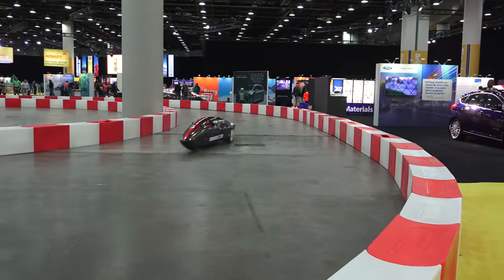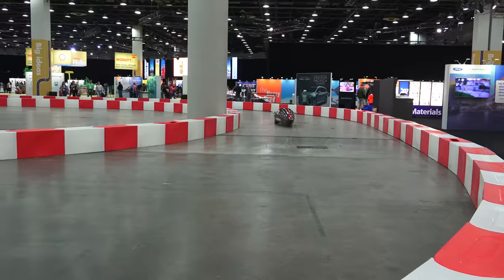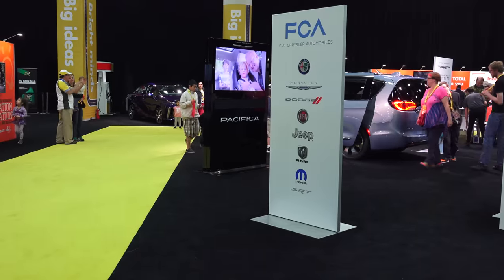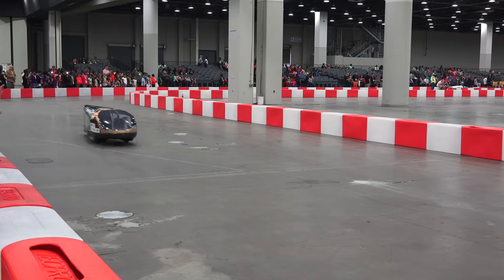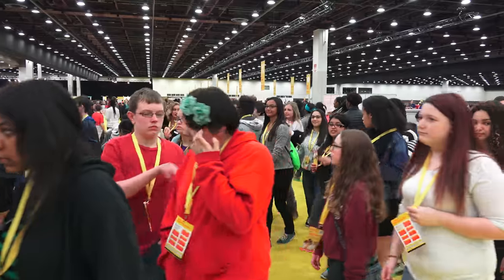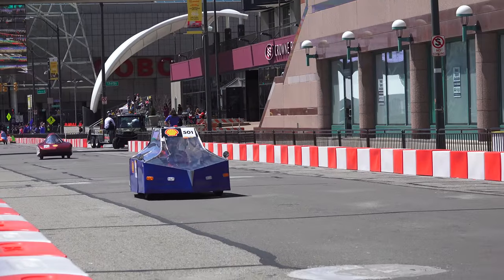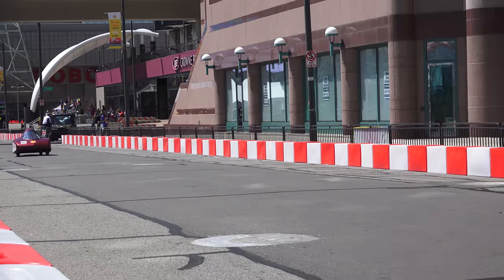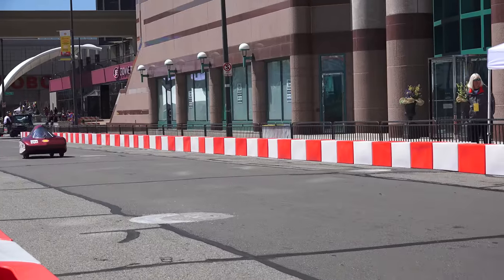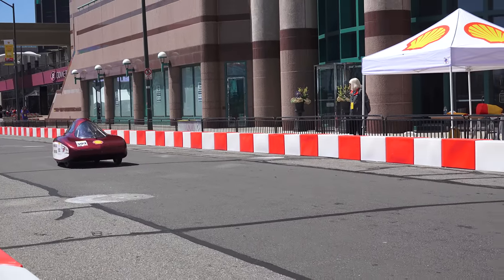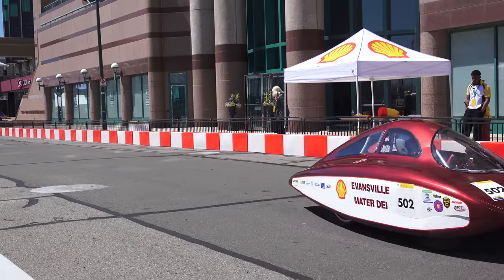Michelin is one of many partners that plays an important role at the Shell Eco-Marathon, dedicating a manufacturing plant for two days per year just for making the ultra-low rolling resistance tires used by the teams. To give you an idea of just how low the rolling resistance is on these unique tires, it's about one-fourth of that measured in kilograms per ton versus a train with steel wheels on a steel rail.